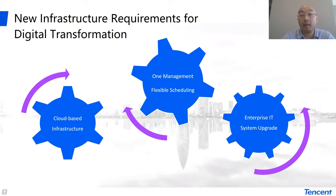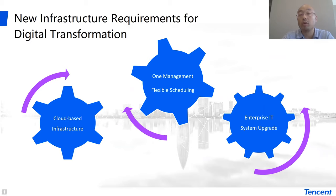Secondly, we try to understand that we need a unified management module, or management portal, that can manage different clouds together. And once we want to launch a task or launch applications, we should do the orchestration in a flexible manner. So through this one unified management module, we can manage several clouds together, and applications understand that they have only one cloud. This is the idea about what we call the multi-cloud management system.